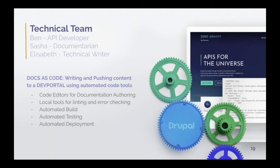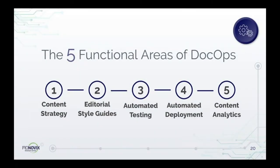If you're feeling the squeeze between business demands and what you know you need to provide to make your customers successful, this is where the DocOps approach of Docs as Code can help you — by allowing you to move faster, improve and ensure the quality of your documentation, and work in tighter collaboration with your development team. We're going to start with a quick look at what the five functional areas of DocOps are: content strategy, editorial style guides, automated testing, automated deployment, and content analytics.